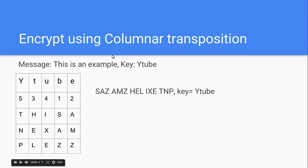Next, you write the letters in their alphabetical column order — this is why it's called columnar transposition. So we take column 1 (B), which is S-A-Z, and put it first. Then column 2 is A-M-Z, column 3 is H-E-L, column 4 is I-X-E, and column 5 (T-N-P) goes last.